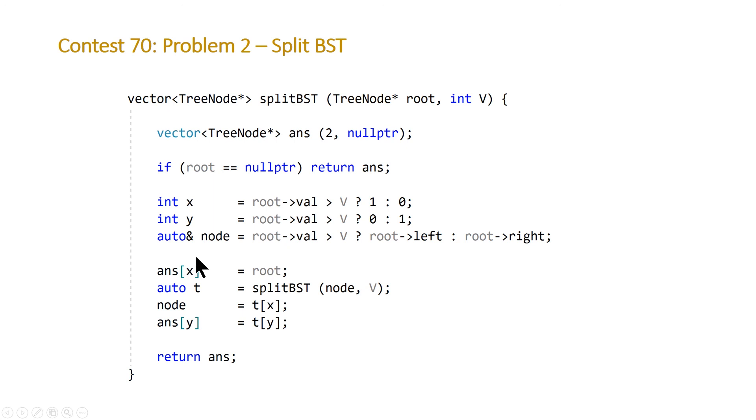Then we make our recursive call to split BST giving it the node that we're going to look at. Then we take our value that we need to overwrite our node that we're processing with and then in the opposite of where our root is we store the remainder that needed to be solved for. Using this recursive function you will be able to solve the problem correctly.